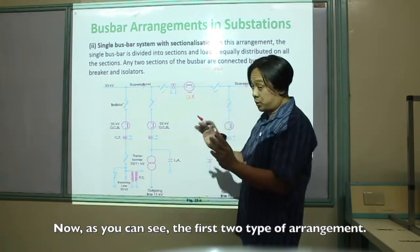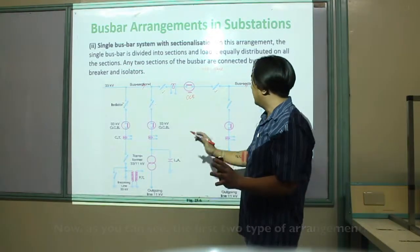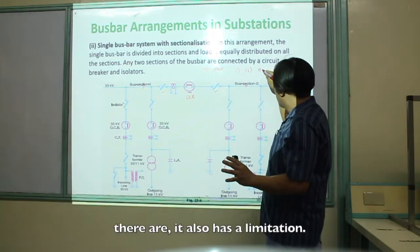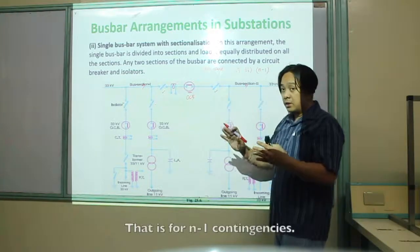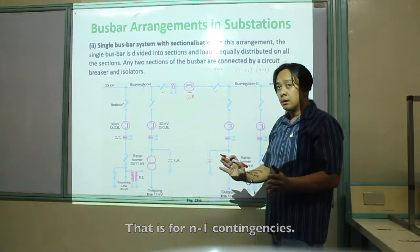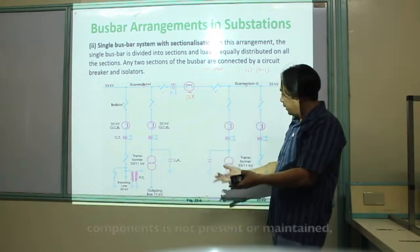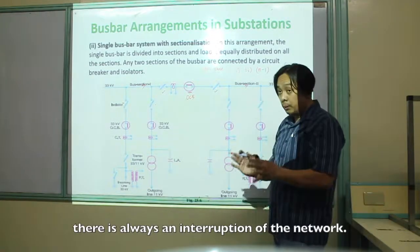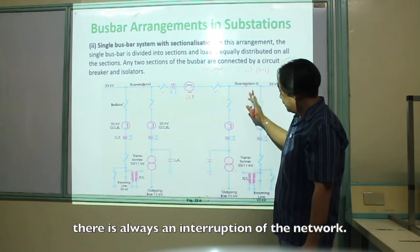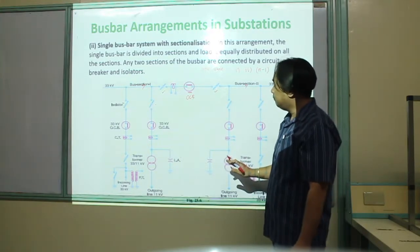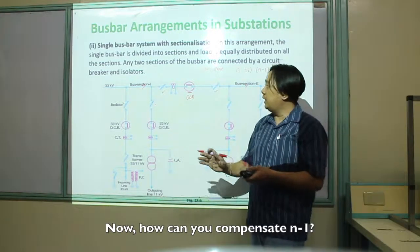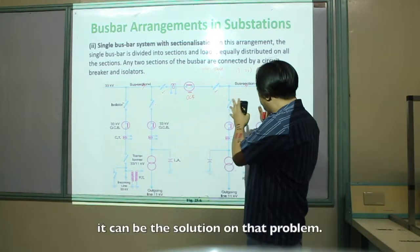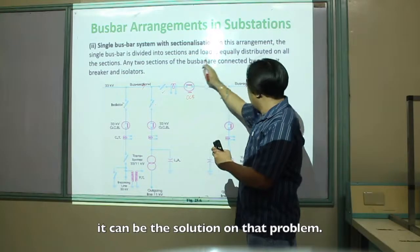The first two types of arrangement have a limitation — they are only for N-1 contingency. Meaning, if one of the bus bars or components is not present or being maintained, there is always an interruption of the network. The next few arrangements can be the solution to that problem.